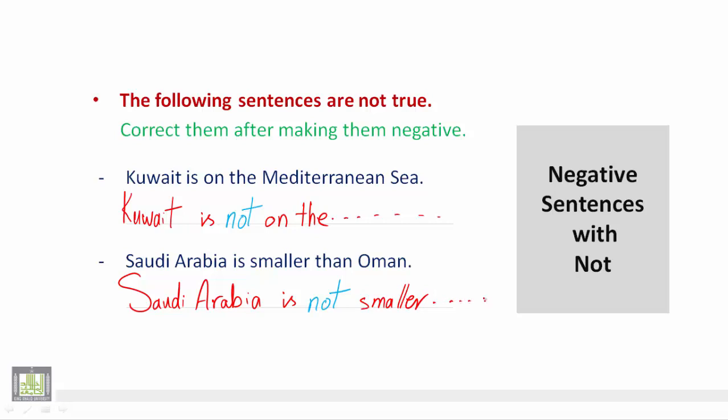What we notice here is that whenever we have the auxiliary verb, or the verb 'to be' as the main verb of the sentence — كلما صادفنا الفعل فعل الكون الذي يتمثل بـ am/is/are في الزمن الحاضر كفعل رئيسي في الجملة — we only add 'not' to the auxiliary verb which is the main verb in this sentence. So whenever we have the verb 'to be' as the main verb, we only use 'not' after the verb.